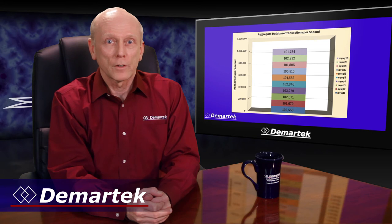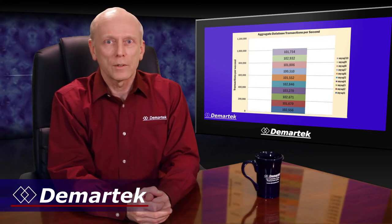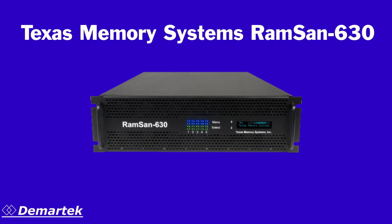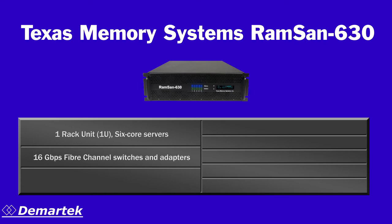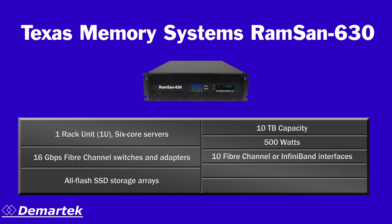Now let's look at another joint reference architecture, this one from Brocade and Texas Memory Systems. The new reference architecture deploys next generation technology in order to significantly increase performance and scalability. Components include new six-core servers with a one rack unit form factor, along with 16 gig fiber channel switches and adapters from Brocade, plus all-flash SSD storage arrays from Texas Memory Systems. The RAMSAN 630 has a usable capacity of 10 terabytes in a 3U enclosure that uses only 500 watts. It can have 10 fiber channel or InfiniBand interfaces and is capable of over 800,000 IOPS and 8 gigabytes per second of bandwidth with fiber channel.